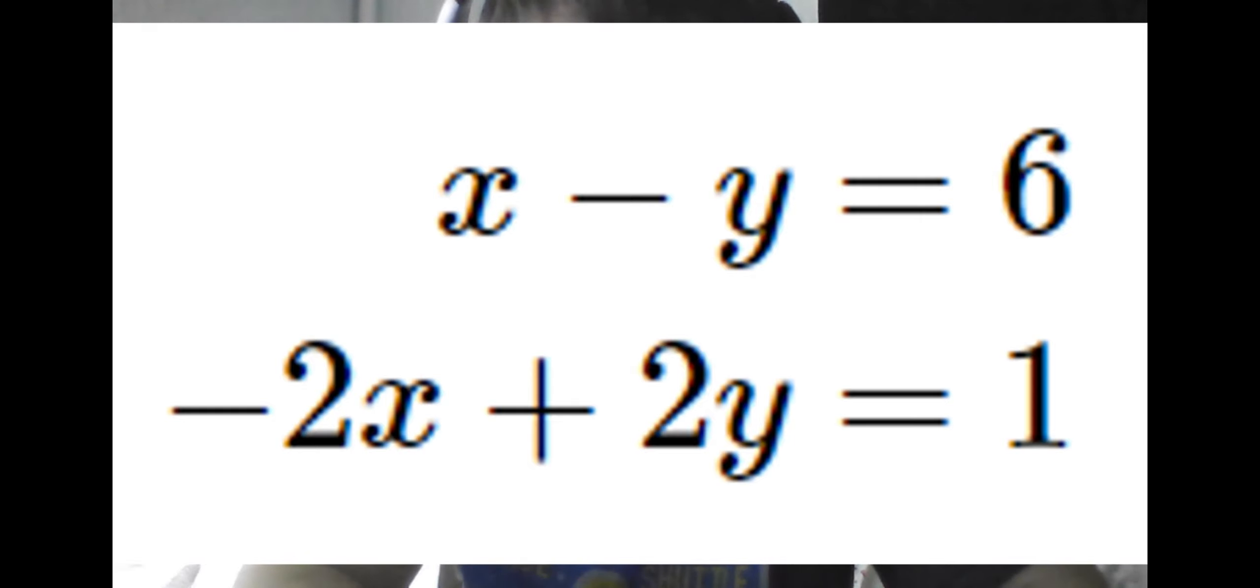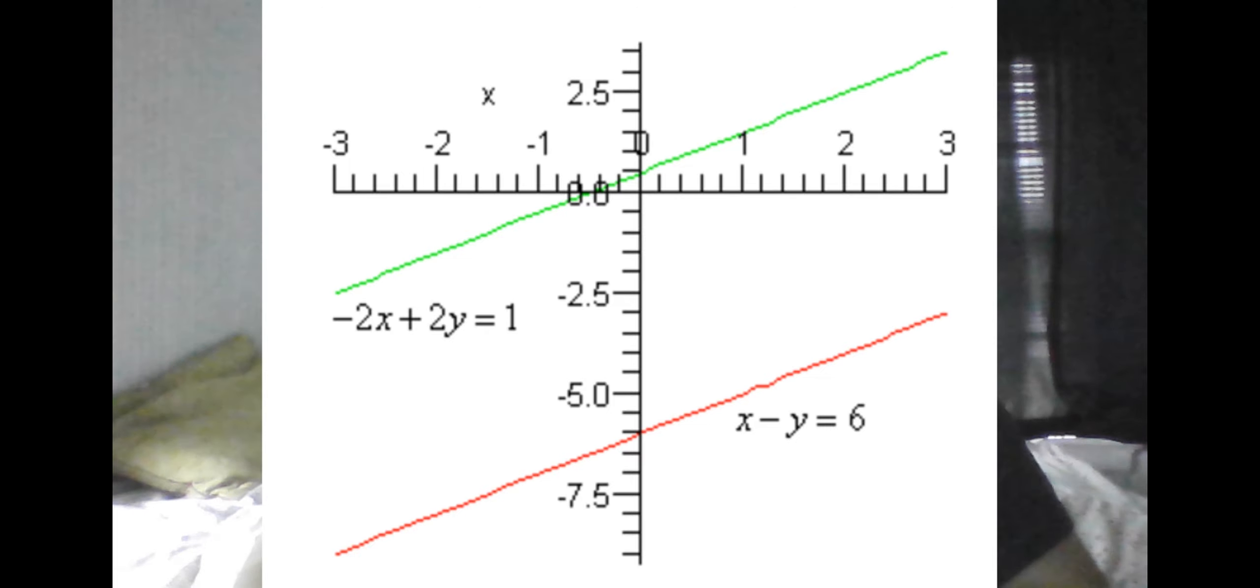And we can see why this is when we look at the graph of the two equations and see that they don't meet at any point. One shortcut you can use to identify systems with no solutions ahead of time is to notice when the two equations have the same change in y over change in x or slope. So because we have 2 over negative 2 and negative 1 over 1, they both simplify to negative 1 in total. So the slopes are identical. And this is important because when the rates of change or slopes are identical, they will never meet. And so they will never have any specific point they intersect at.